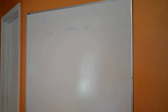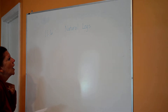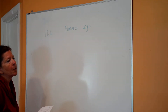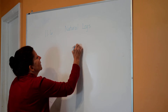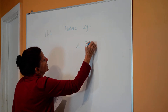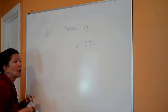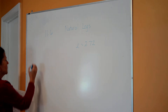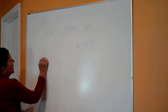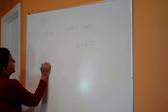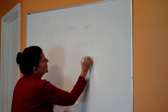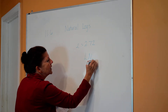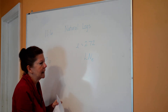Today we're talking about section 11.6, which is natural logs. We've already talked about the number E — remember E is equal to 2.72. Natural logs are very similar to common logs. Remember common logs have an understood base of 10. Natural logs, which is LN, have an understood base of E.